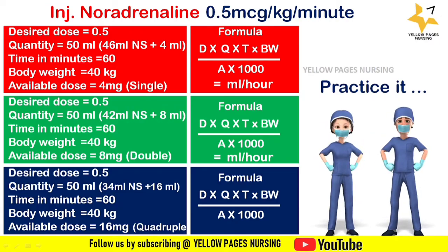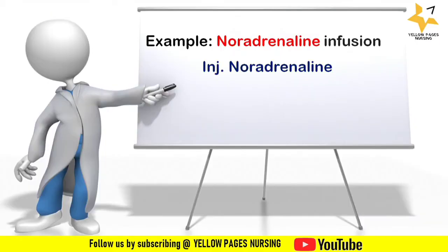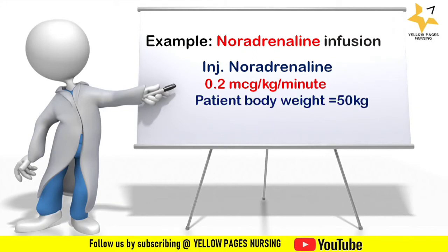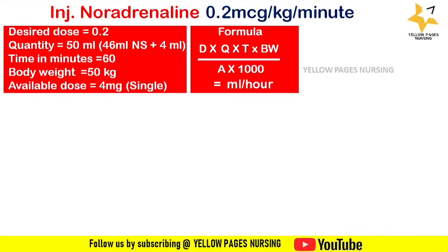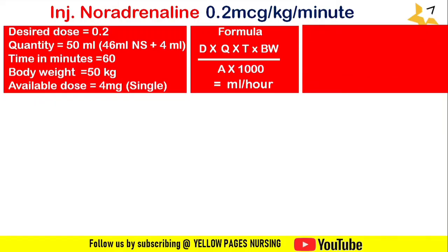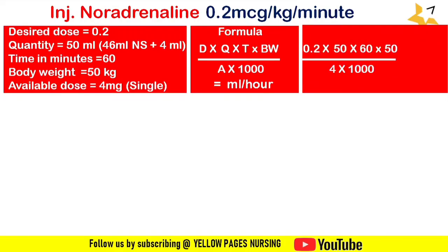One more example: order is injection noradrenaline 0.2 mcg/kg/min, patient body weight 50 kg. For single strength: desired dose = 0.2, quantity = 50 ml (46 ml normal saline + 4 ml noradrenaline), time = 60 minutes, body weight = 50 kg, available dose = 4 mg. Answer: 7.5 ml per hour.